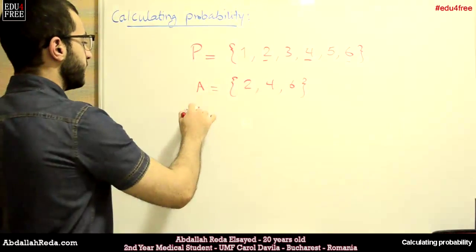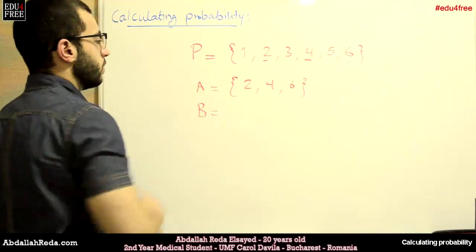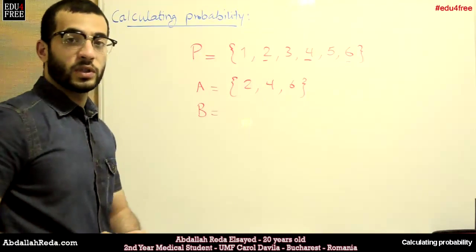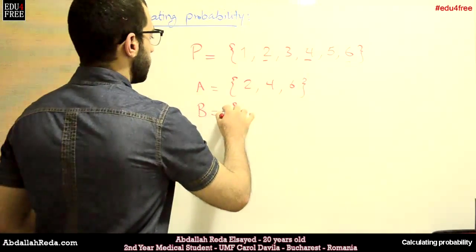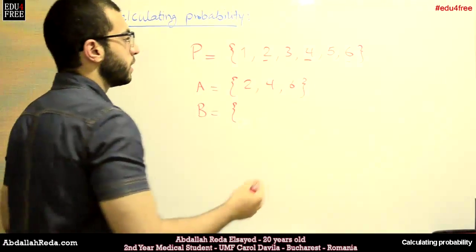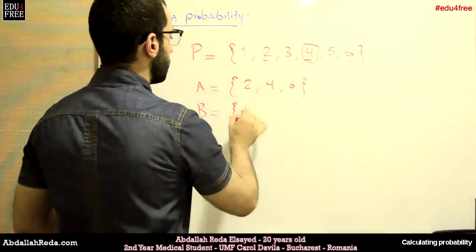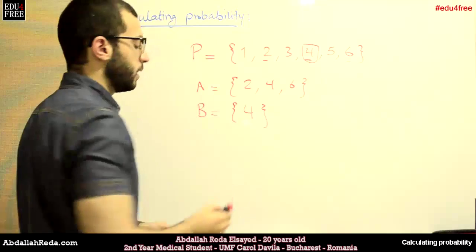And then we have the event B, which is the probability of the appearance of a number which is divisible by 4. So the only number which is divisible by 4 here is 4. So we just have one probability.